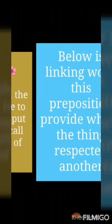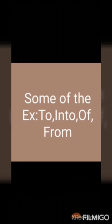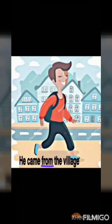Third — direction. The preposition that describes where to go or where to put something is called a preposition of direction. Some examples: to, into, of, from. Let me give you one example: 'He came from the village.' Here, 'from' is the preposition word.